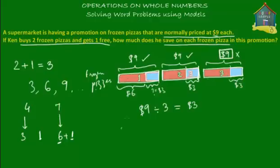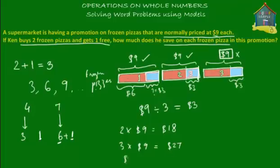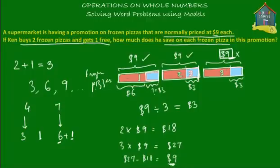If you were to do it the calculation way, Ken paid for two pizzas, so he paid two times $9, which equals $18. But normally he would have paid three times $9, which equals $27. So how much did he save? He saved the difference: $27 minus $18, which equals $9 — the same total savings as before. This $9 is distributed over three pizzas, so $9 divided by 3 equals $3. Same result: $3 saved per pizza.